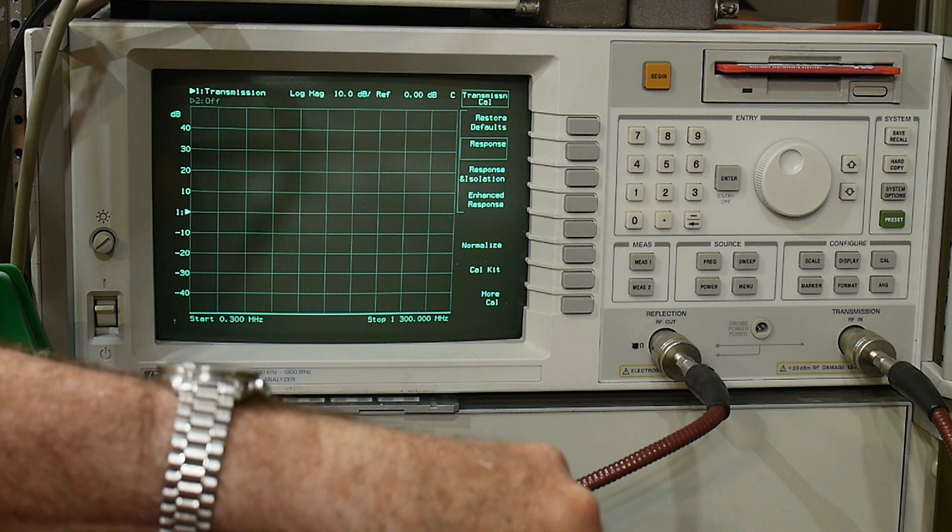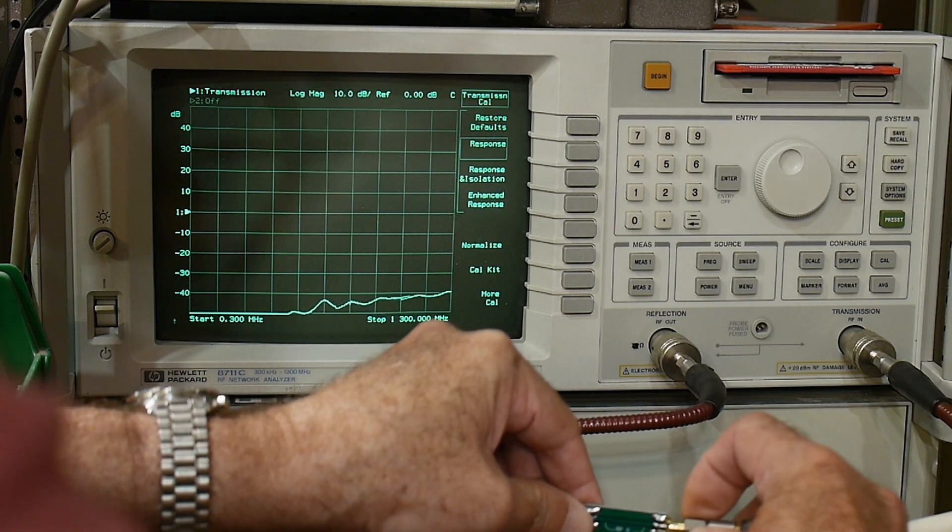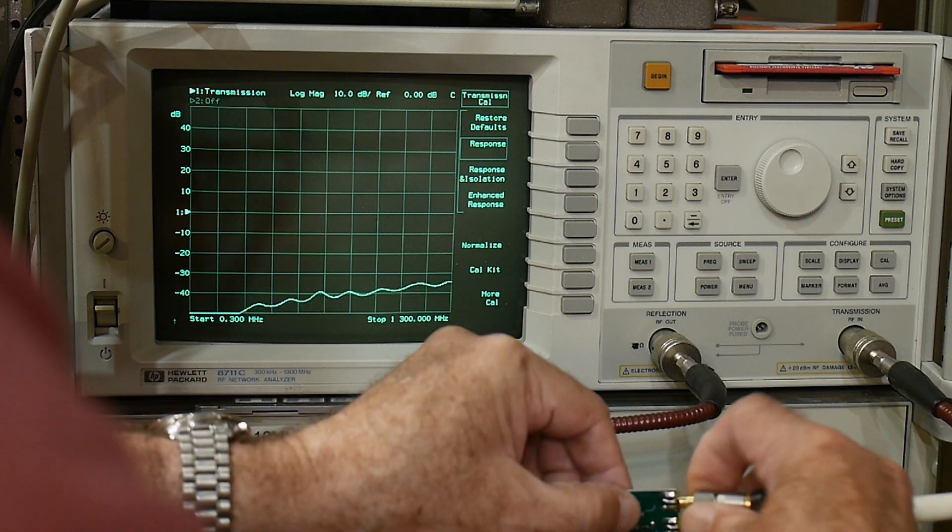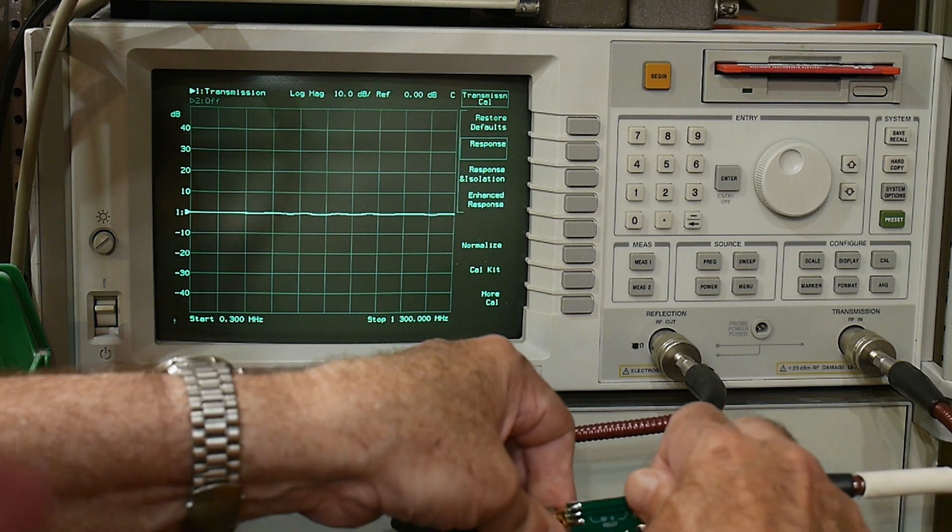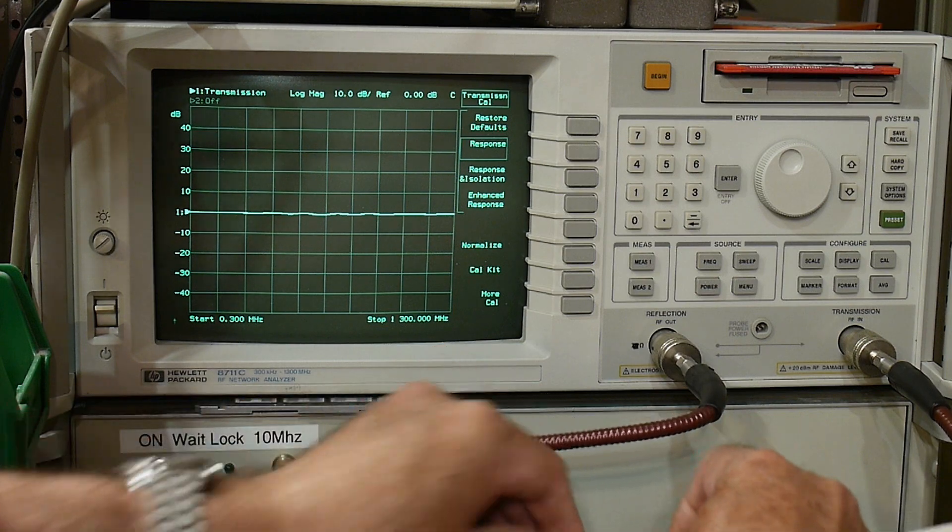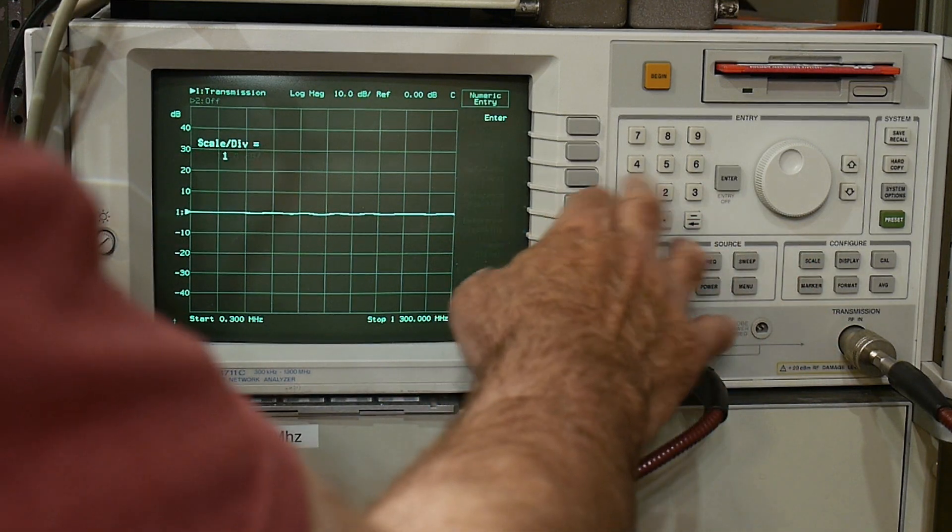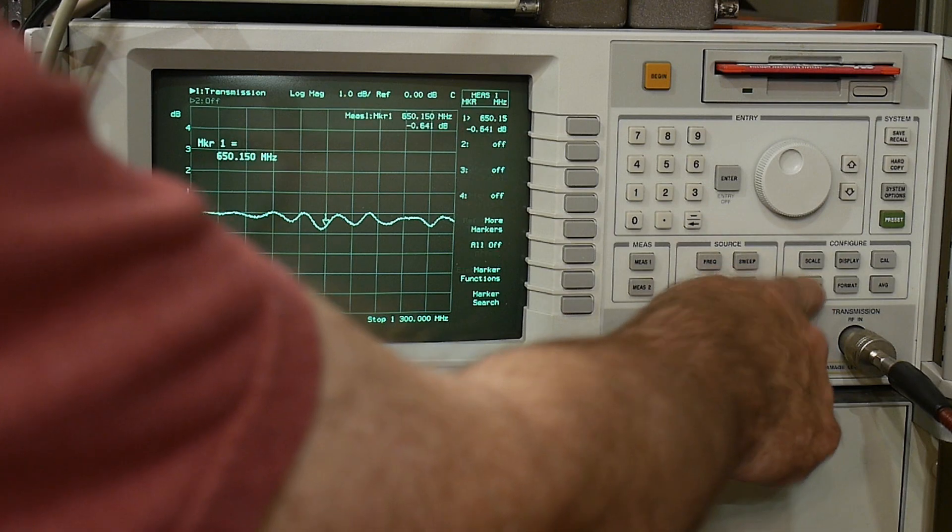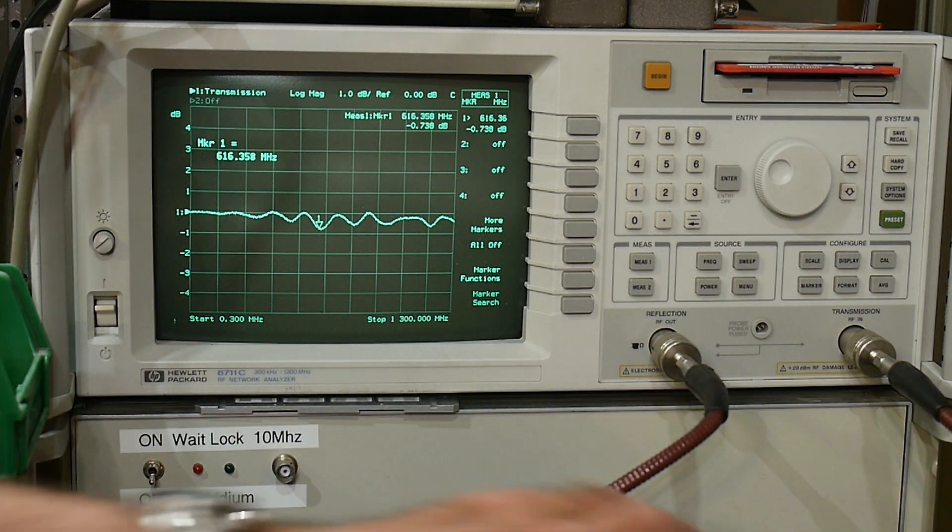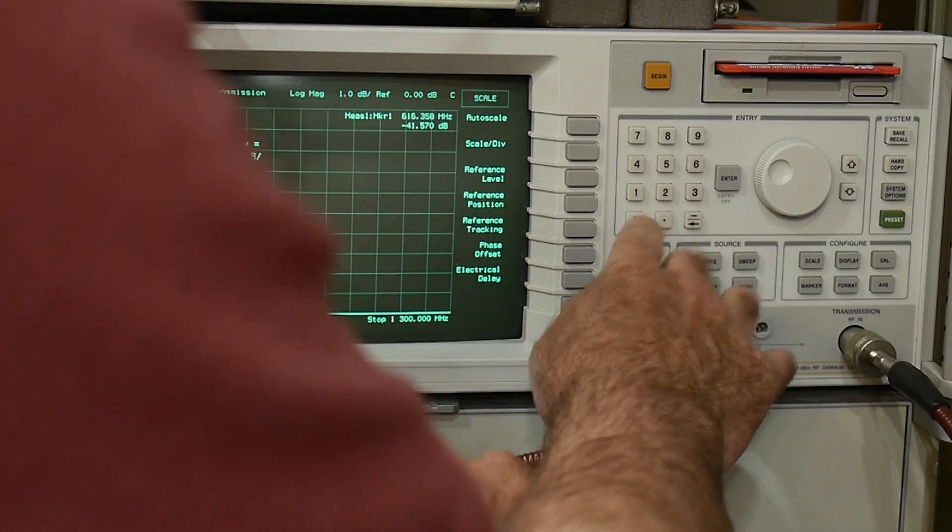We'll do zero dB and see what the insertion loss is. It looks pretty flat and pretty good. Let's scale it to one - it's a little bit bumpy but within a dB. It's got some little bumps in the middle there at 600 megahertz, but we don't really care about that. Let's change the scale back to 10.